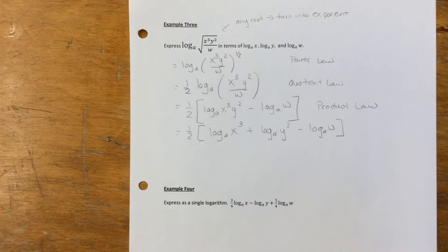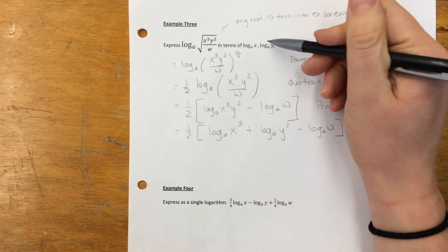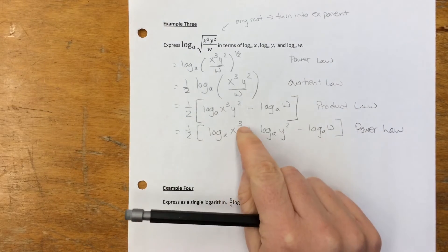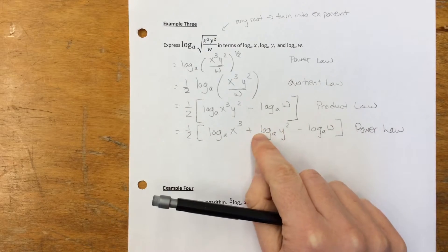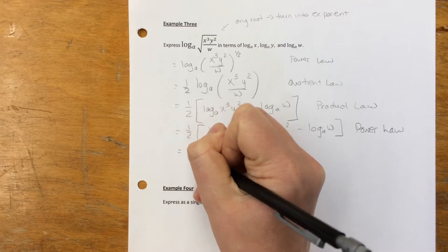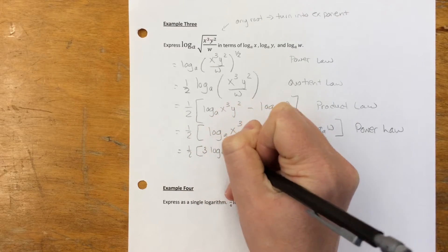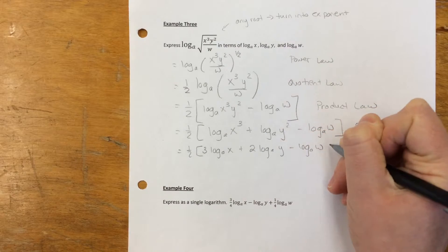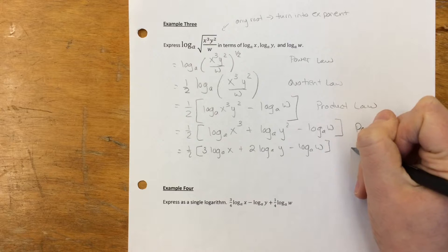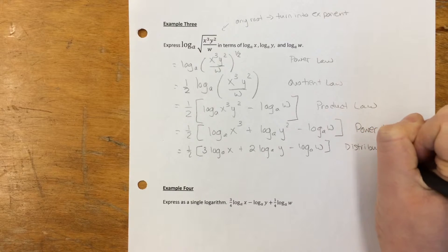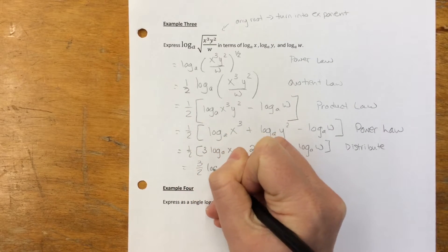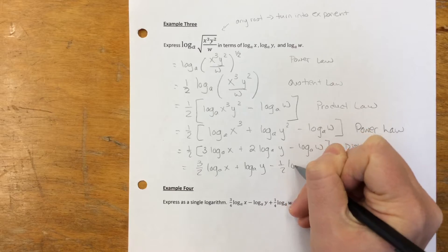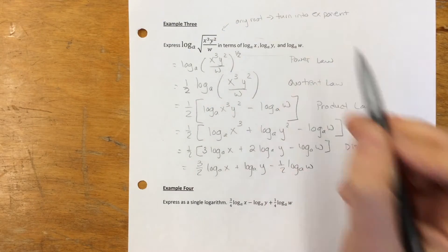We're still not done because we need it in terms of log base a of x, log base a of y, etc., with no exponents remaining. So use the power law again to bring the exponents down — the 3 in front and the 2 in front. We get 1 half times the quantity 3 log base a of x plus 2 log base a of y minus log base a of w. Distributing the 1 half gives 3 over 2 log base a of x plus log base a of y minus 1 half log base a of w. And we're done.